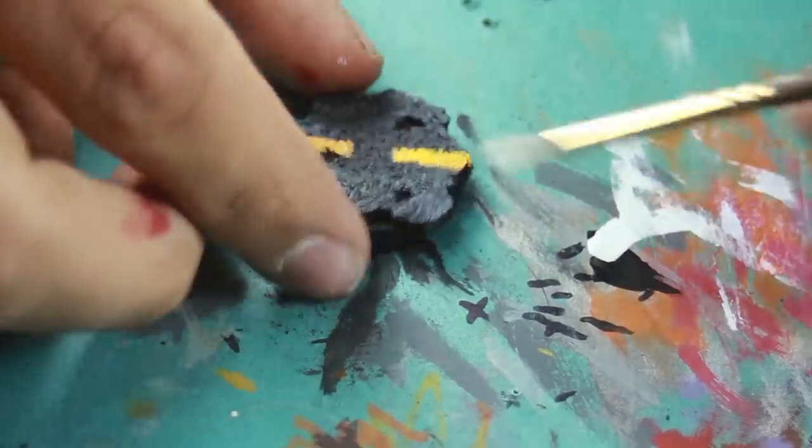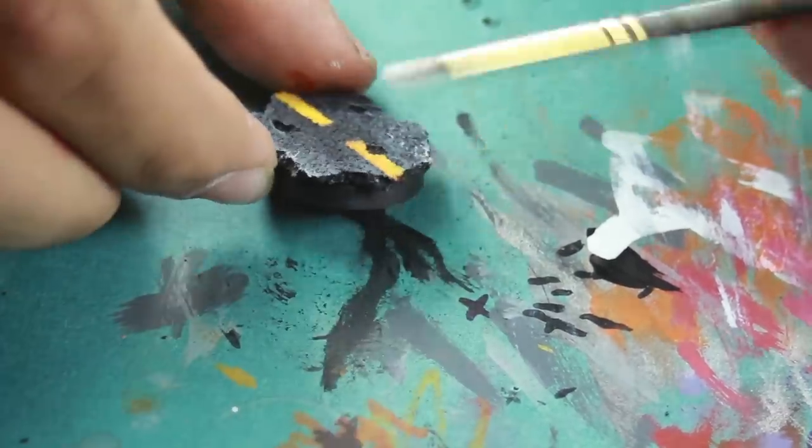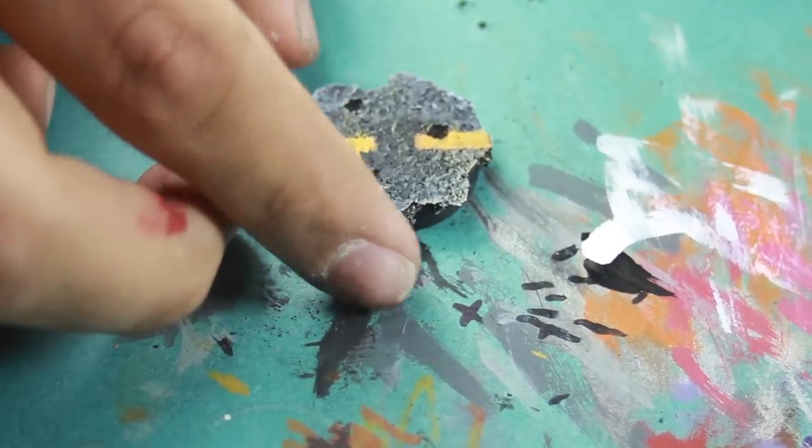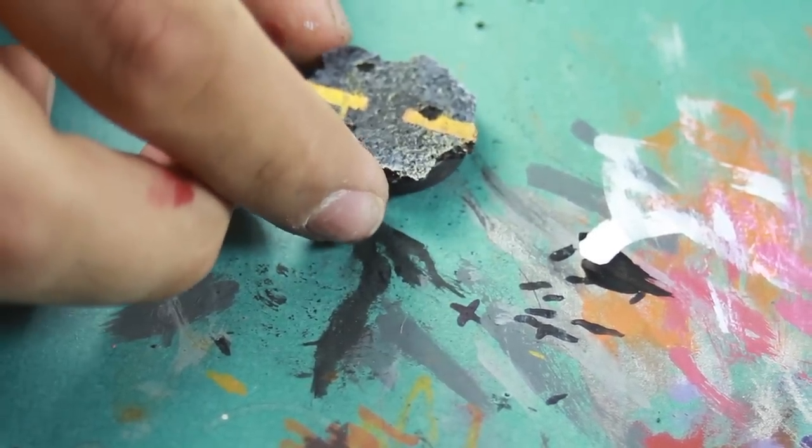And now the lines are done, I'm going to do a quick dry brushing of bright white. This is going to add a lot of contrast to the base. See there was a little smudge with the yellow, nothing I can't clean up.